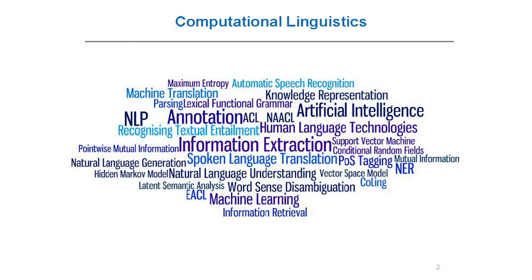First of all, I would like to share with you the same vocabulary, so I will start with some definitions. Computational linguistics is the scientific study of language from a computational perspective, and the goal of computational linguistics is to create computational models of different kinds of linguistic phenomena and to make computers deal with some tasks related to human language.